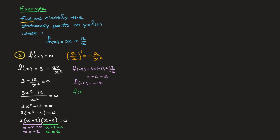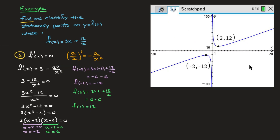Now for x equals 2: f(2) equals 3 times 2 plus 12 over 2, which is 6 plus 6, so f(2) equals 12. That's the y-coordinate of the second stationary point. So we have found the stationary points with coordinates (−2, −12) and (2, 12).